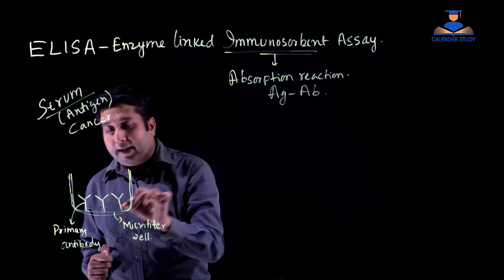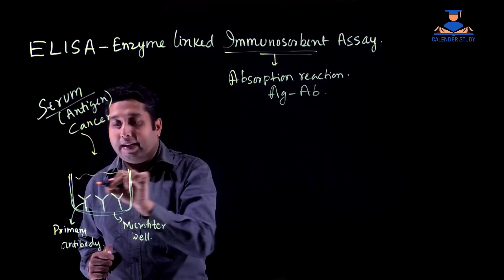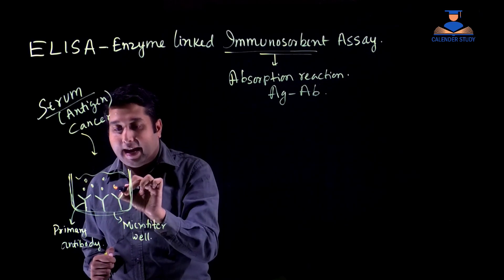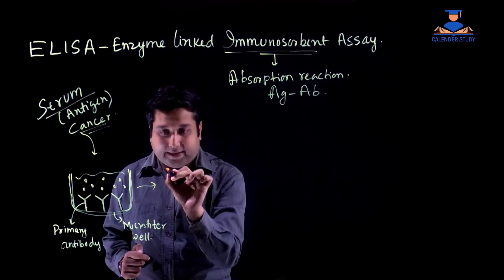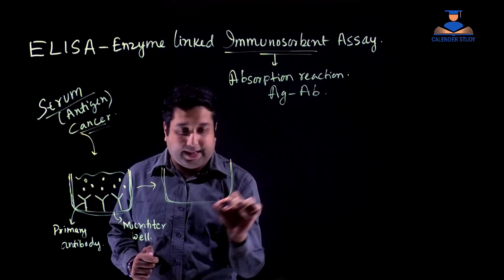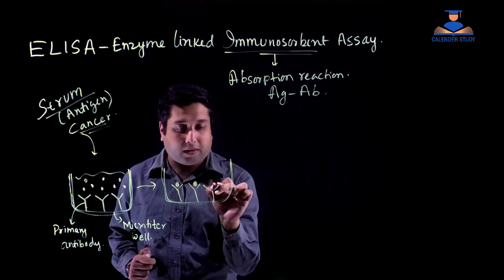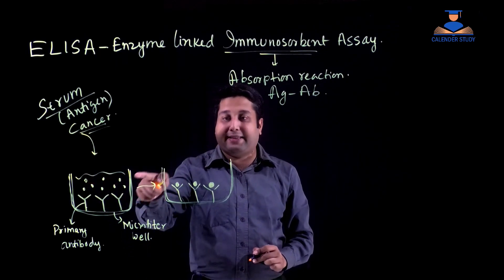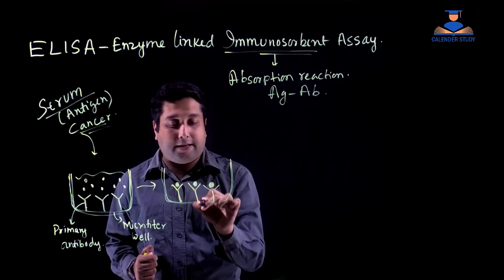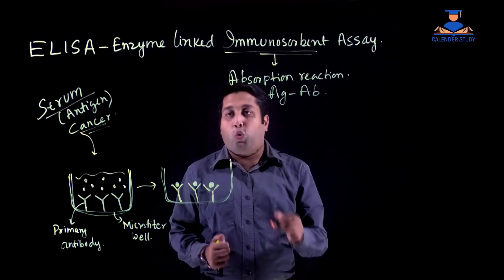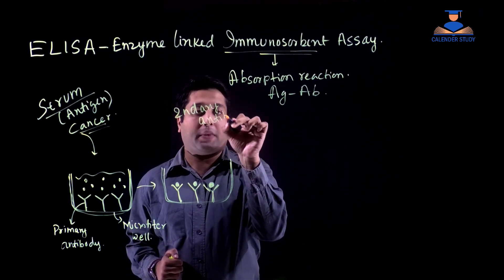We then add the patient's serum into the well that contains the primary antibody. The patient's serum contains a variety of antigens, and the cancer antigen may be present among them. The cancer antigen present in the serum binds with its specific primary antibody in the well. After that, the excess serum is washed out, and we are left with the primary antibody-antigen complex.